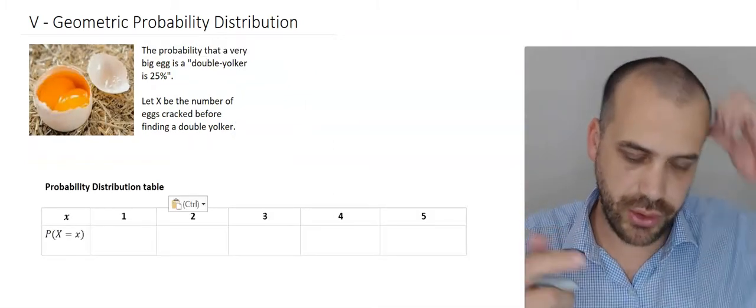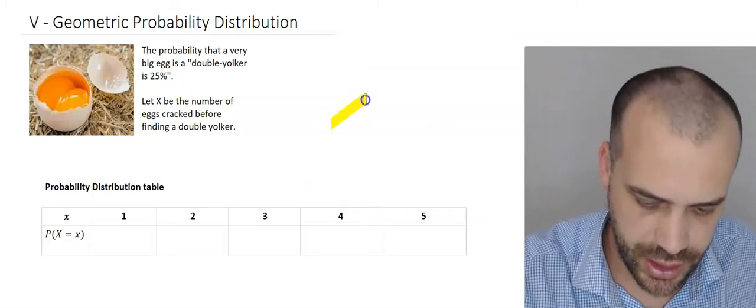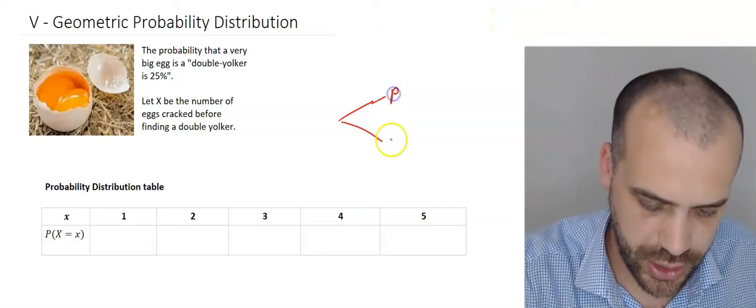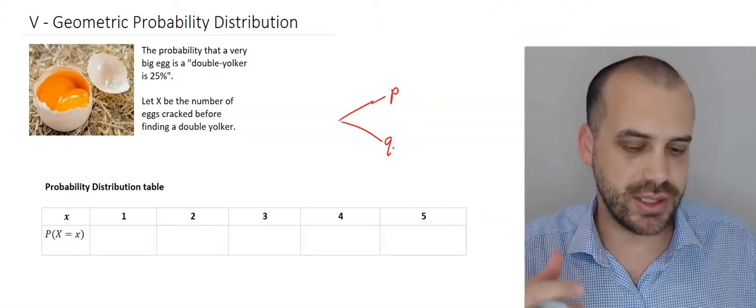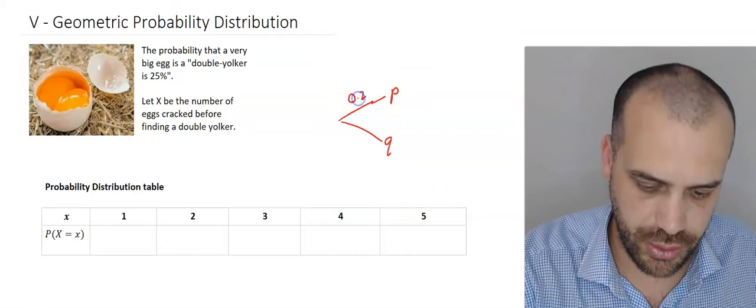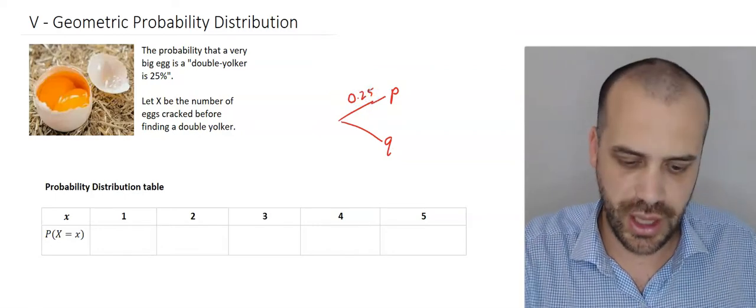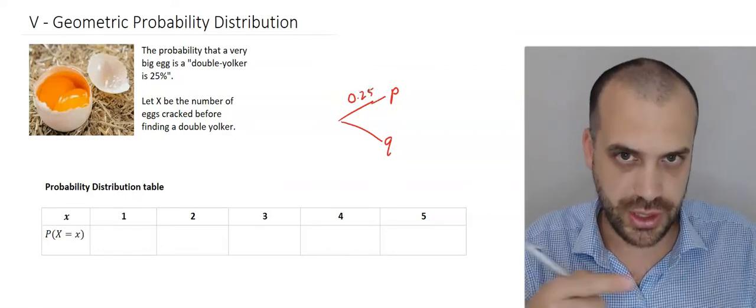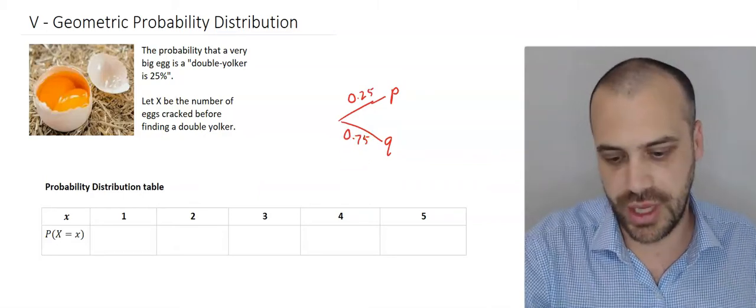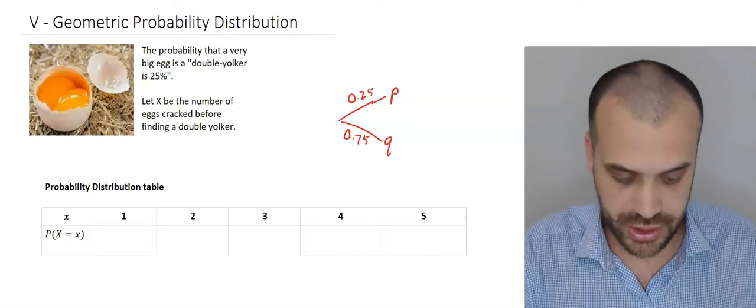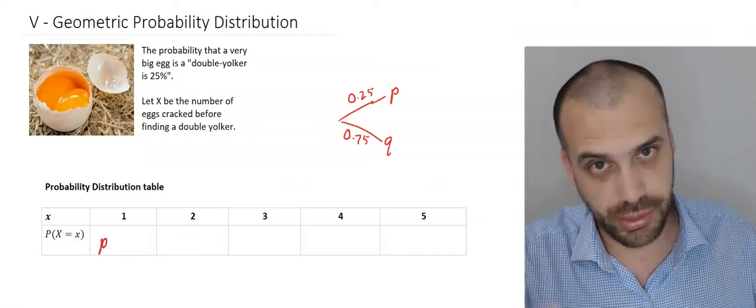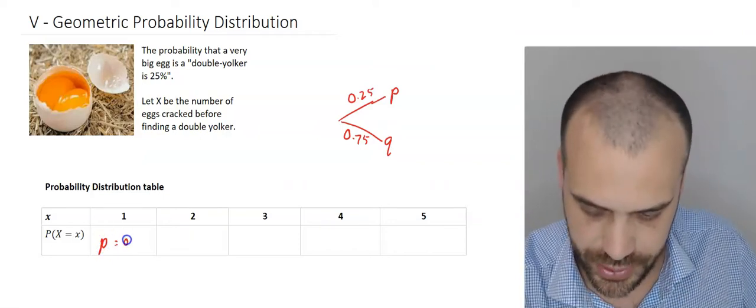So what's the probability that we get one on the first try? That's really easy. A tree diagram. Traditionally with this, we use the letters P and Q. P represents success, getting one of these double yokers, and we know the probability of that happening is 0.25, and that means that the probability of failure Q is the complement of that, which is 0.75. The probability of getting it on our first try is just 0.25, which is just the letter P, because P represents the probability of success.